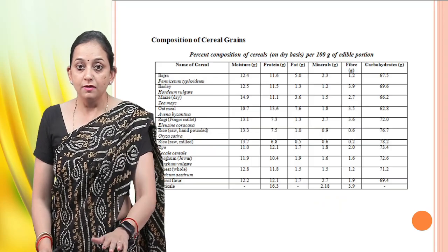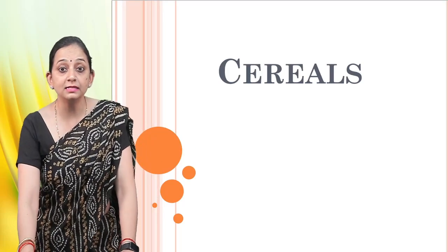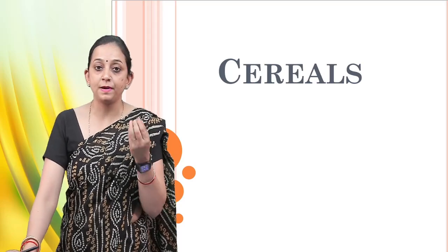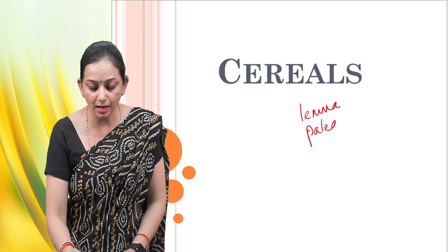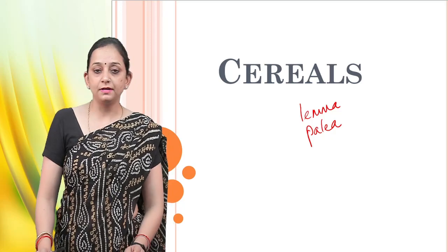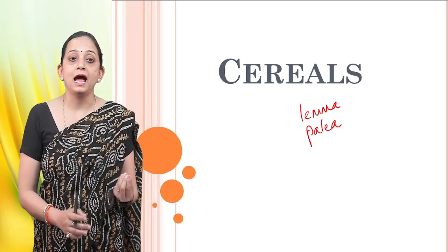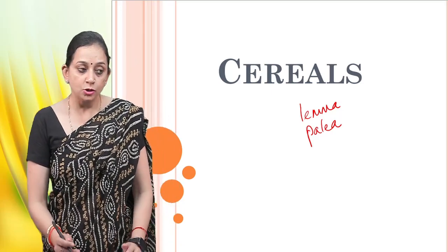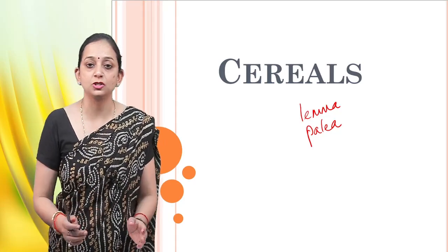When we talk about the structure of cereals, the grains are formed from the flowers and they are enclosed in a pair of leaves known as the lemma and pallea. After fertilization, the ovary and the ovule start to develop into the grain. So after the process of fertilization, the grain starts to develop.